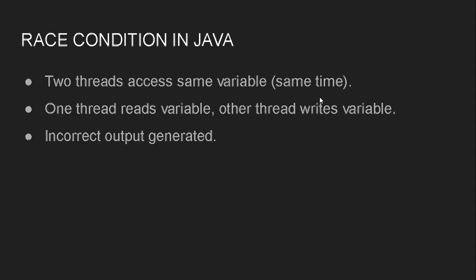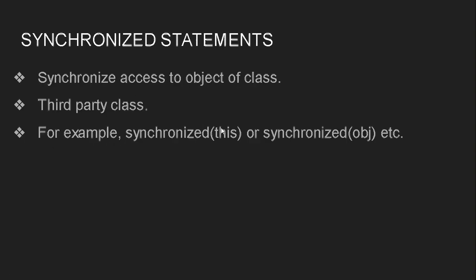For example, if you want to first write a variable and then read it, but you don't use synchronization, it may read first and then write — which is not what we want. The proper order of execution is achieved through synchronization. If you don't use it, it causes a race condition and incorrect output; but if you use synchronization, it will first write the variable and then read it as expected, and the output will be correct.